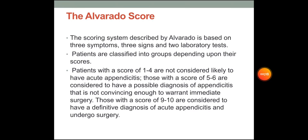The scoring system described by Alvarado is based on 3 symptoms, 3 signs and 2 lab tests. Patients are classified in two groups depending upon their scores. Patients with a score of 1 to 4 are not considered likely to have acute appendicitis. Those with a score of 5 to 6 are considered to have a possible diagnosis of appendicitis that is not convincing enough to warrant immediate surgery. Those with a score of 9 to 10 are considered to have a definitive diagnosis of acute appendicitis and have to undergo surgery.